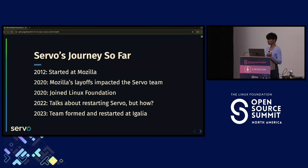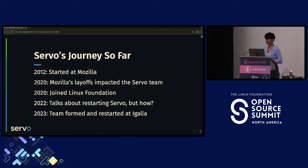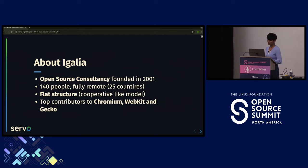In 2020, the Servo project joined the Linux Foundation, and in 2022 talks about restarting Servo began. But how and who would restart this project? An open source project doesn't just need engineers — it also needs funding, new contributors, and lots of people. In 2023 it was restarted at Igalia, where a team was formed. Igalia is an open source consultancy founded in 2001, with 140+ people working fully remote across close to 25 countries, with a flat cooperative-like model.